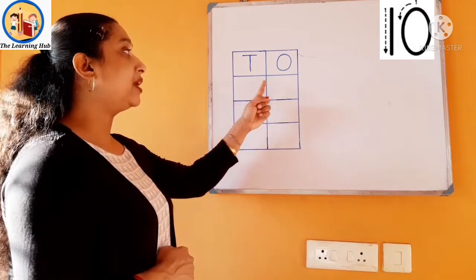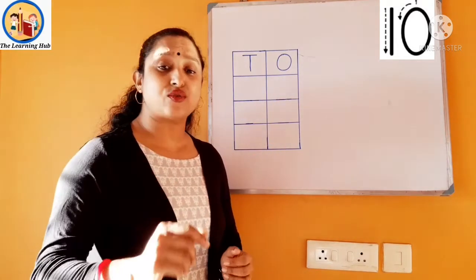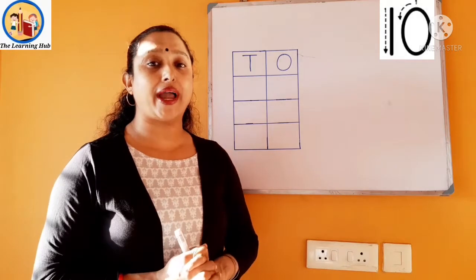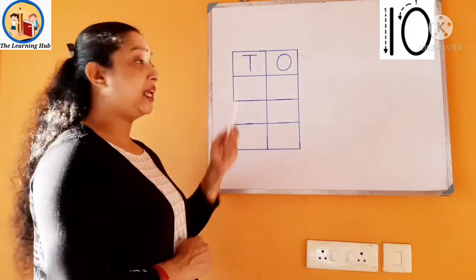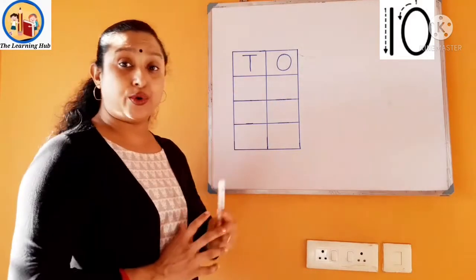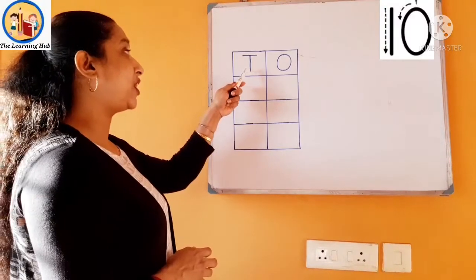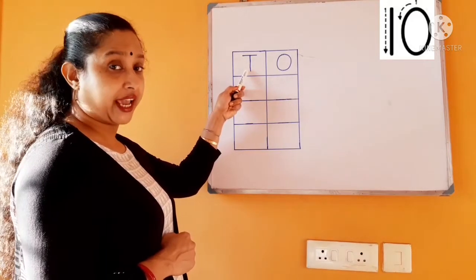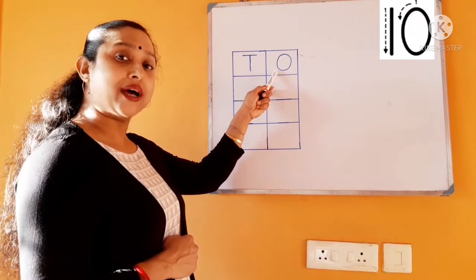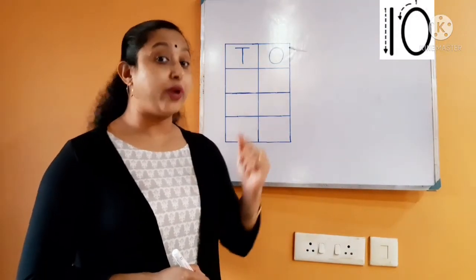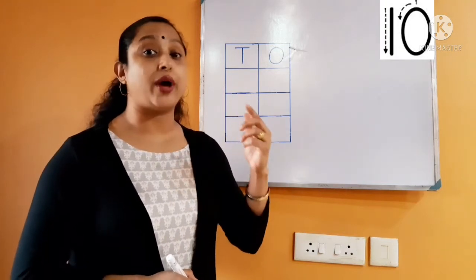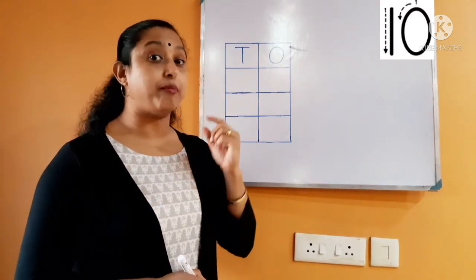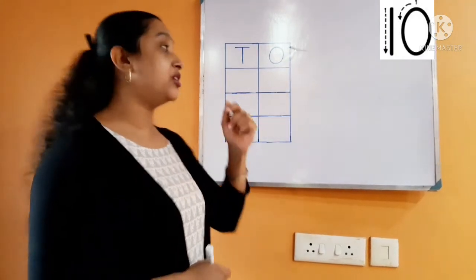Like this — one, two boxes. So children, let's write number ten. Everyone open your math copy and follow how to write number ten. Here I have written T and O. Do you know what T and O mean? T stands for tens and O stands for ones. I repeat: T stands for tens and O stands for ones. So one, zero, ten — we say number one first, so we write number one first, then we write zero.